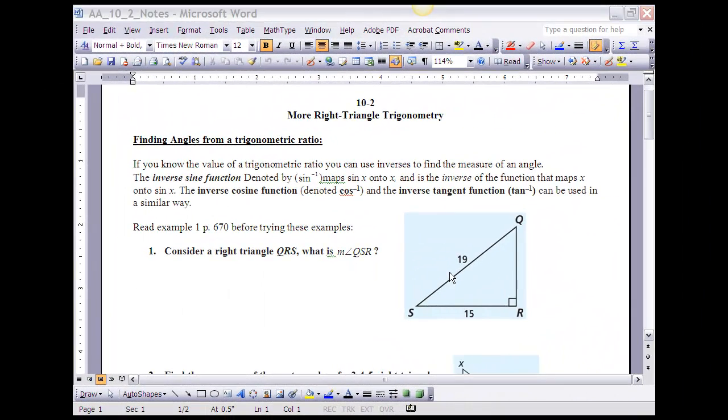Okay, this is section 10.2. In 10.1 we talked about the trigonometric ratios and we looked at using those ratios to find the lengths of sides of right triangles. In 10.2 we're going to look at the inverse of that and use what we call the inverse trigonometric functions to find the measure of angles within right triangles.